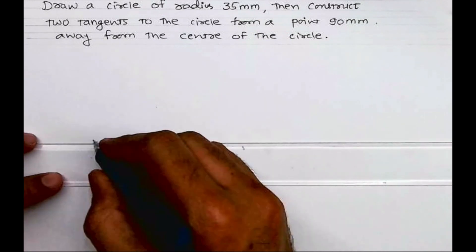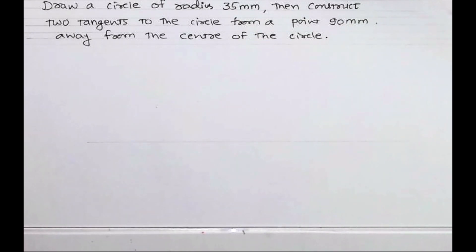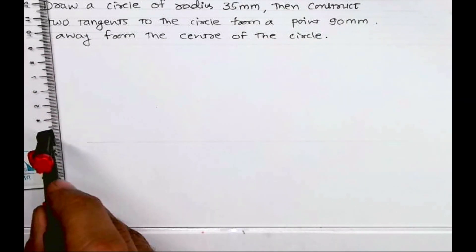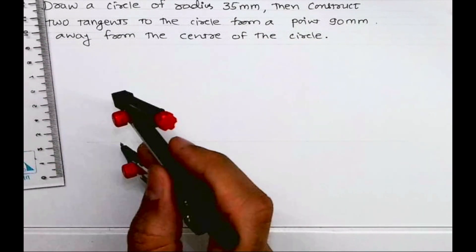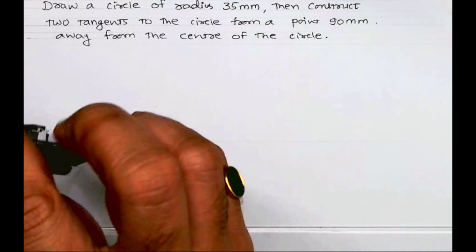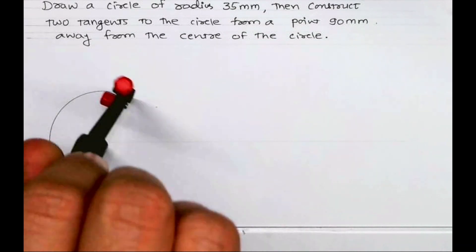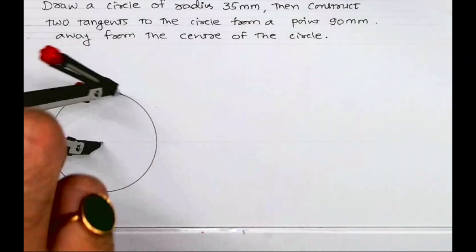First we need to draw a circle of radius 35mm. I will draw one line and take radius 35mm and from anywhere, draw a circle of radius 35mm.